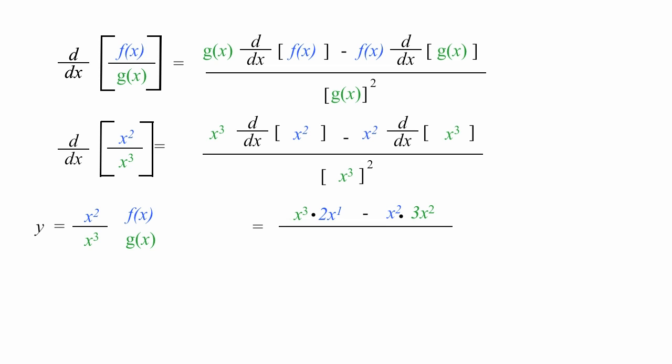All this divided by x cubed times x cubed, which is x cubed squared. When I multiply, I add the exponents, so this becomes x to the sixth power.